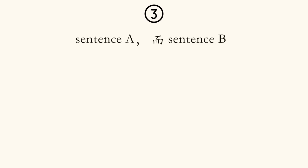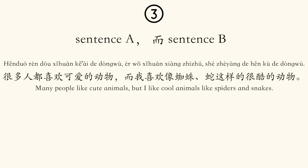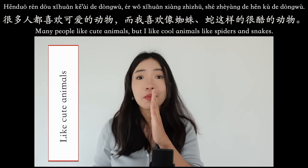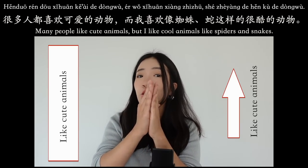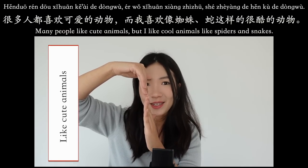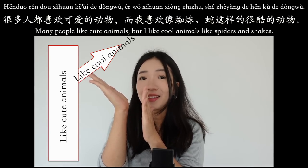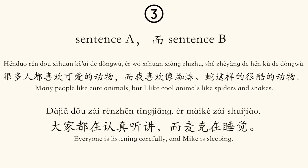Number three: Sentence A, 而 Sentence B. For example: 很多人都喜欢可爱的动物，而我喜欢像蜘蛛、蛇这样的很酷的动物。 大家都在认真听讲，而迈克在睡觉。 Let's go directly to the superhighway: a lot of people are driving on the main road. I'm not following them nor going against them — instead, I take a slight turn and go onto the second road. I'm just different from them.